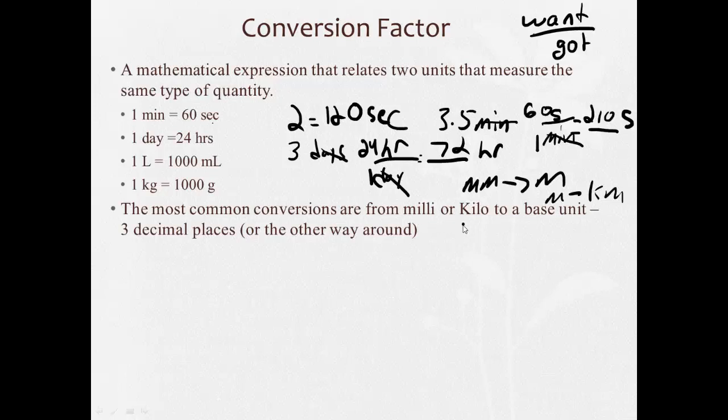So, if I have 300 millimeters, and I want to see how many meters. Well, I can do what you want over what you've got. And I want meters. I have millimeters. And there's 1,000 millimeters in one meter. So, 300 divided by 1,000. And I have that with 0.3. Or, I could have just moved the decimal, 1, 2, 3 to the left, and get 0.3.